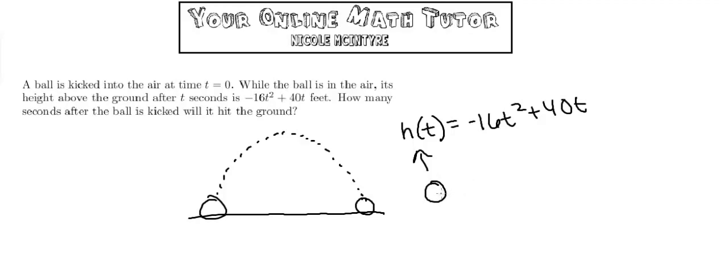Using that information, we say 0 equals negative 16t squared plus 40t. Then we solve for t, which will give us the time at which the height is 0, or on the ground.